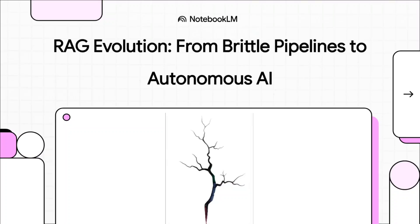Let's get right into it. We've all heard the big promise of retrieval augmented generation, RAG for short. It was supposed to be the thing that made AI factual, grounded in real data, so it would finally stop making stuff up. But that first version had a critical, and honestly, a pretty catastrophic flaw. Today, we're going to track the evolution of RAG from those really brittle, simple pipelines to the truly autonomous AI systems that are being built as we speak.